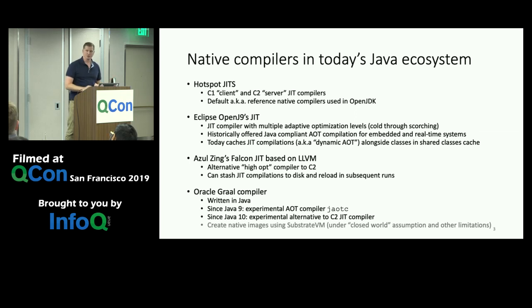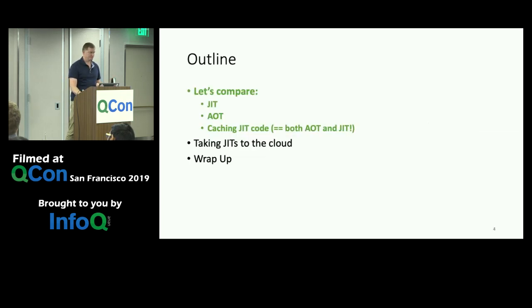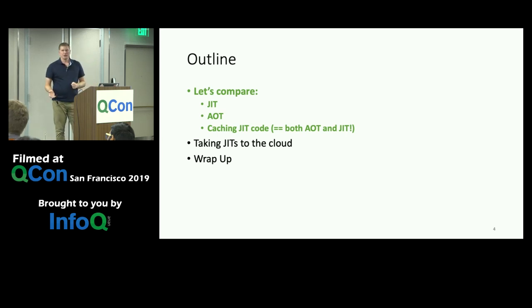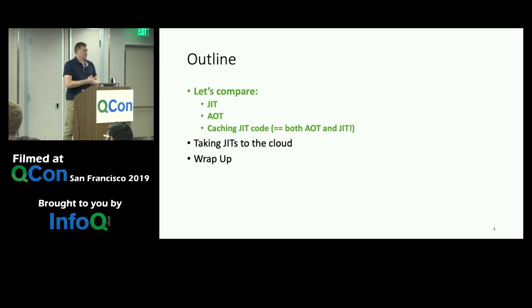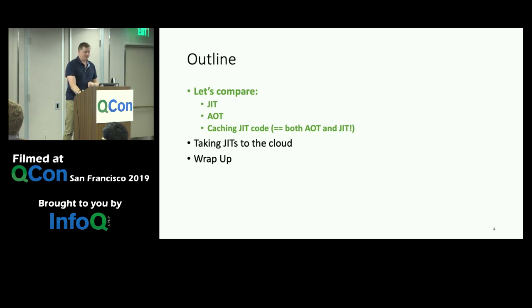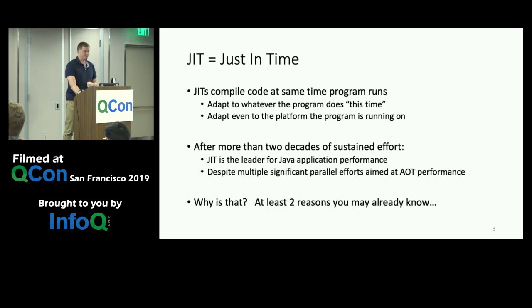The outline of my talk: I'm going to start by comparing JIT, AOT, and caching JIT compilers, explaining the trade-offs in using them. Then I'll talk about how we take JITs to the cloud.